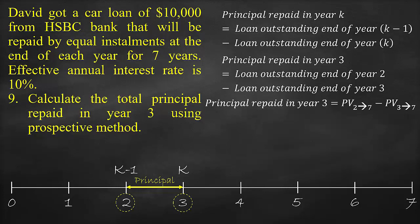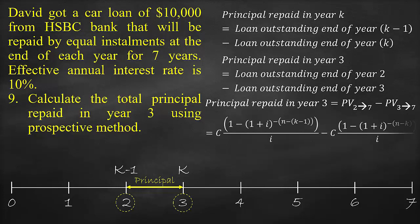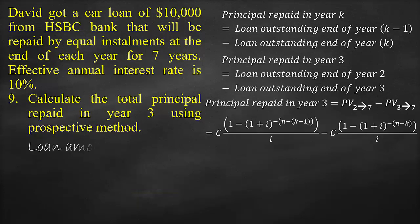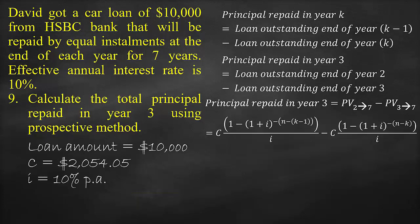Using the prospective method formula, the principal repaid in Year 3 is equal to the loan outstanding at the end of Year 2 minus the loan outstanding at the end of Year 3. Each is calculated as the ordinary annuity present value of unpaid instalments at that point in time. The periodic instalment is $2,054.05, the effective annual interest rate is 10%, the total number of periods is 7 years, and the number of paid instalments is 3 years.